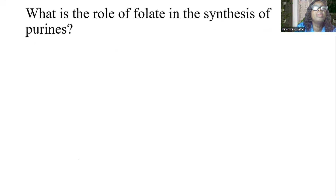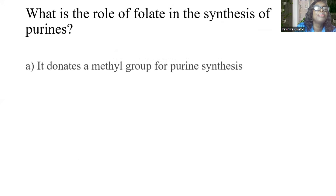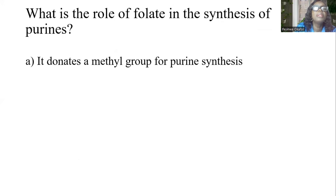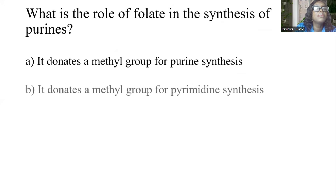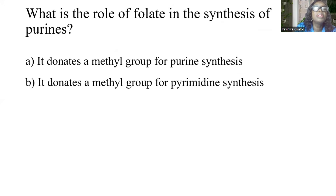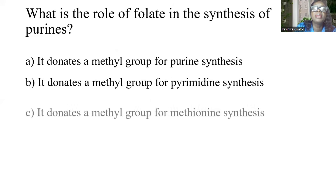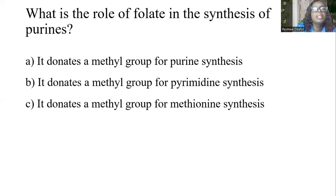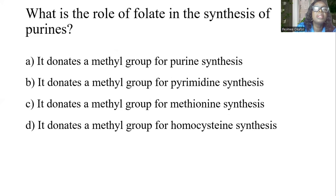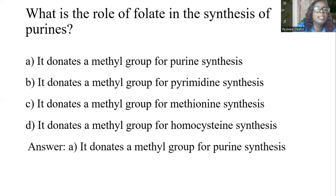What is the role of folate in the synthesis of purines? A, it donates a methyl group for purine synthesis. B, it donates a methyl group for pyrimidine synthesis. C, it donates a methyl group for methionine synthesis. D, it donates a methyl group for homocysteine synthesis. And the answer is A, it donates a methyl group for purine synthesis.